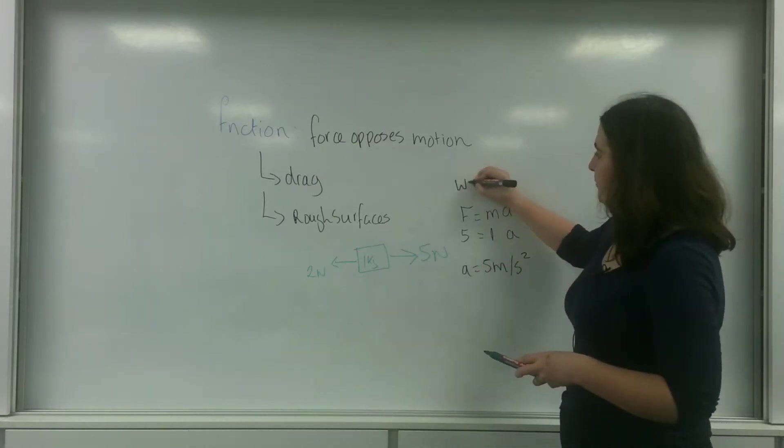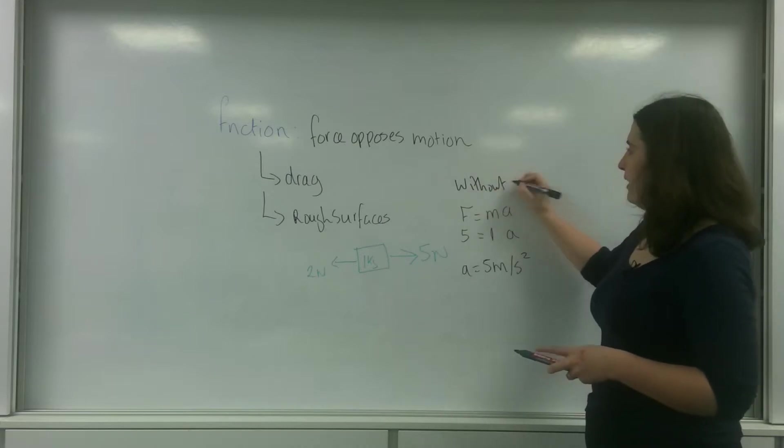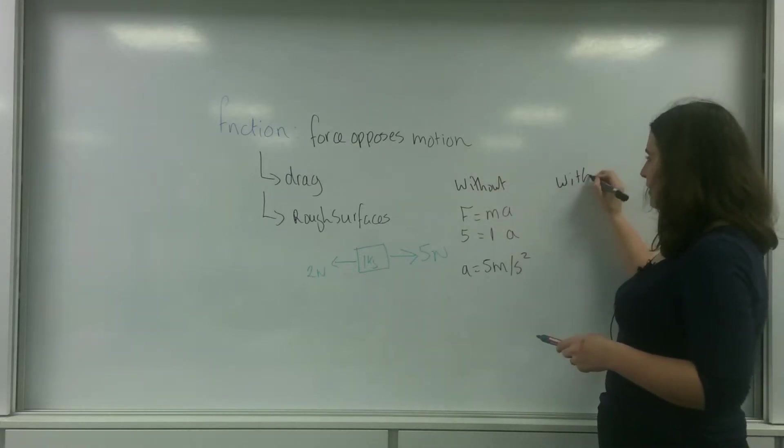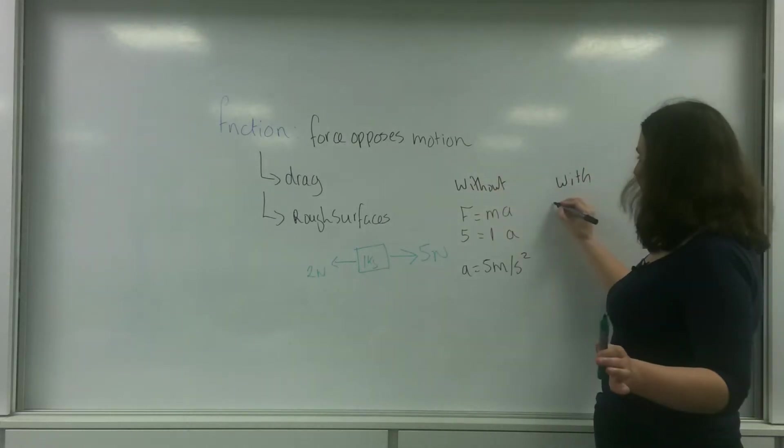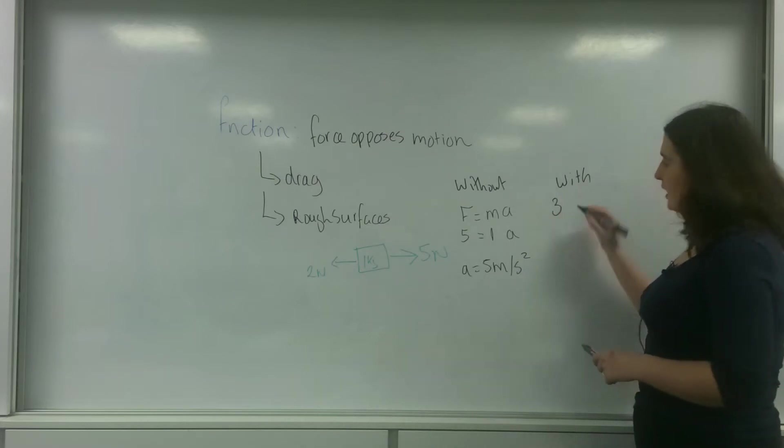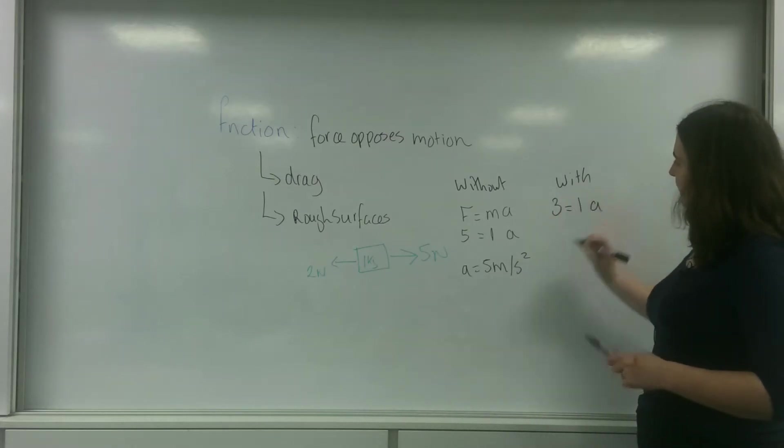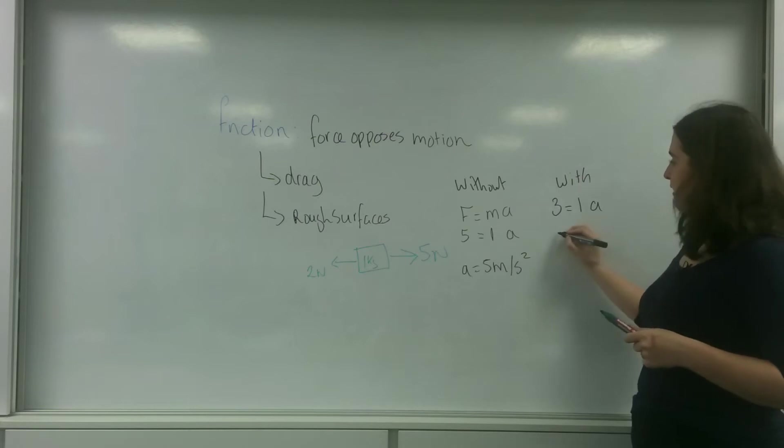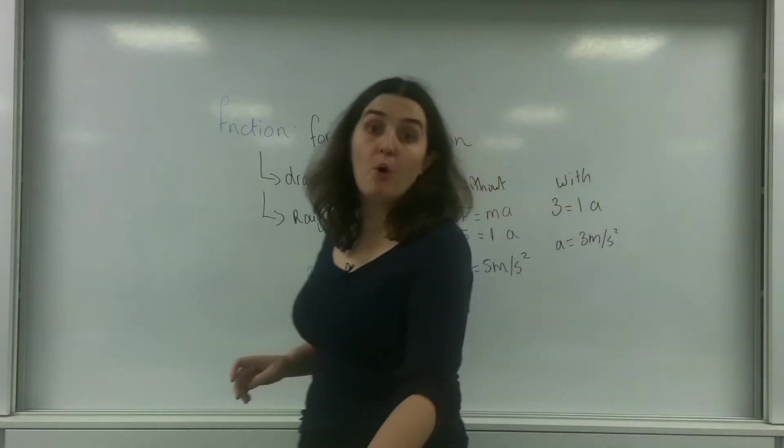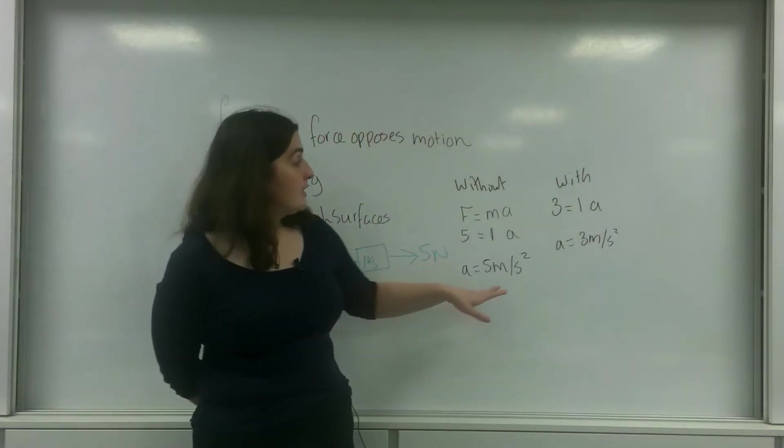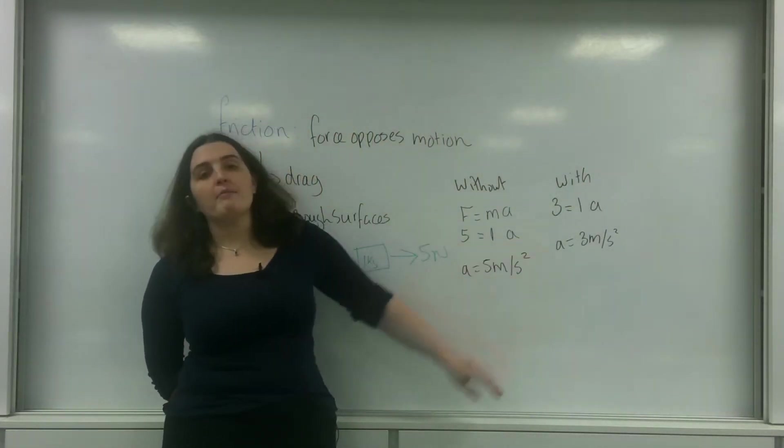And this is with. So the resultant force here is 3, and that equals 1A. And as you can see here, my acceleration would be 3 metres per second squared. And that is important here, that as you can see, with friction, I accelerate much slower.